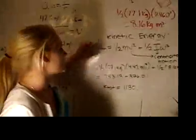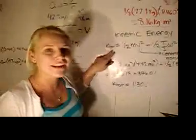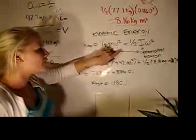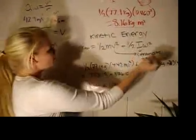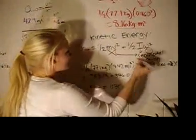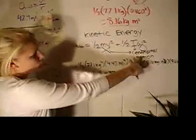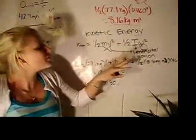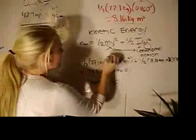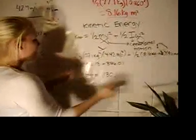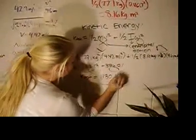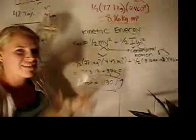Now we have to find kinetic energy. To find K total, you have to use one-half mv squared plus one-half I omega squared. M and I both correspond to their respective translational and rotational motion terms. You add them all together, and you get 1130 joules. That's the total kinetic energy.